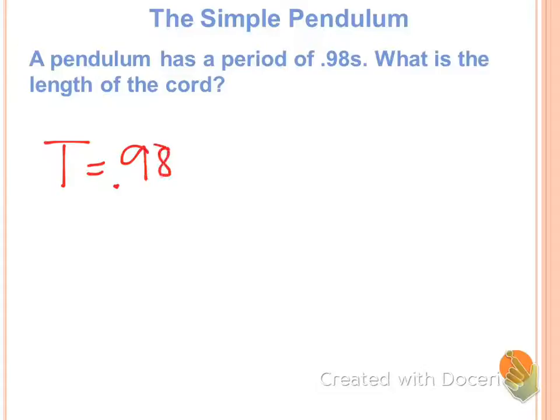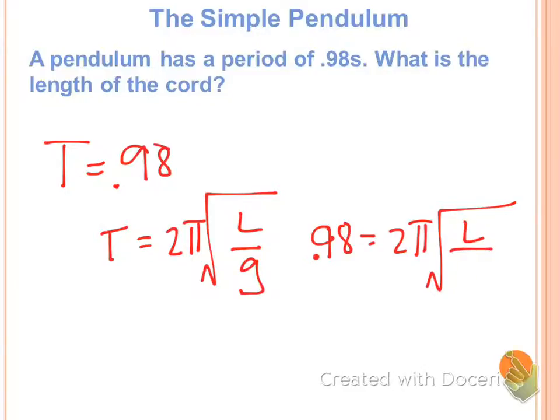Okay, T equals 0.98. So algebraically here, I'm going to divide by 2 pi first. Remember in your calculator, you either need to do divide by 2, divide by pi, or divide by parentheses 2 pi.